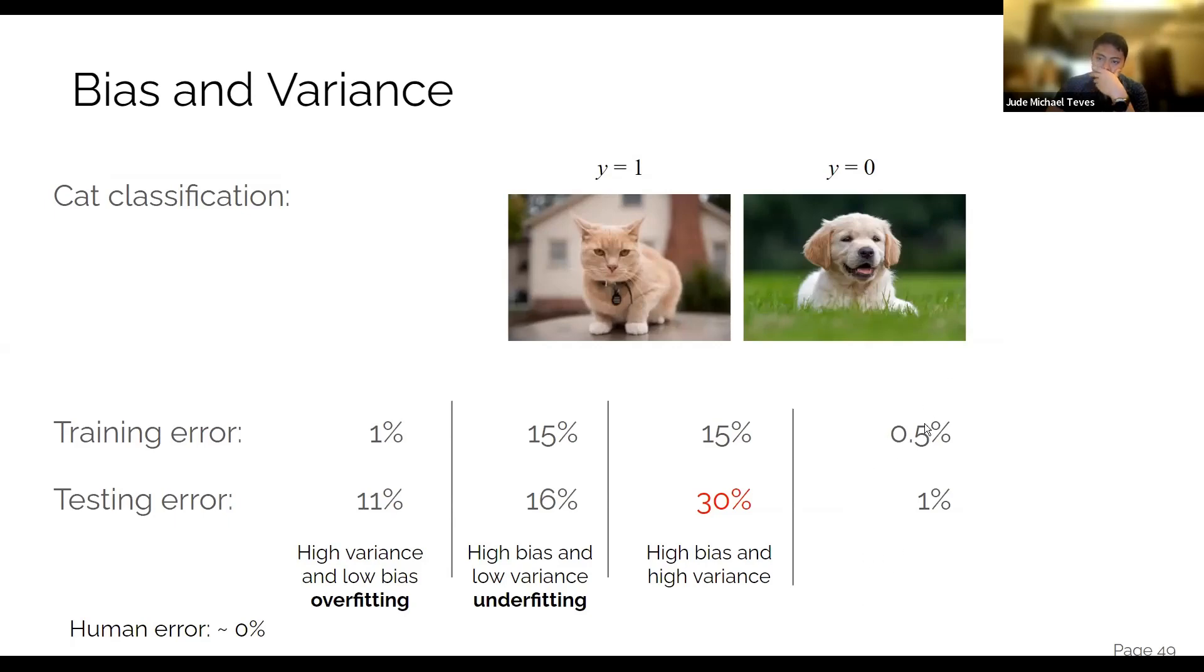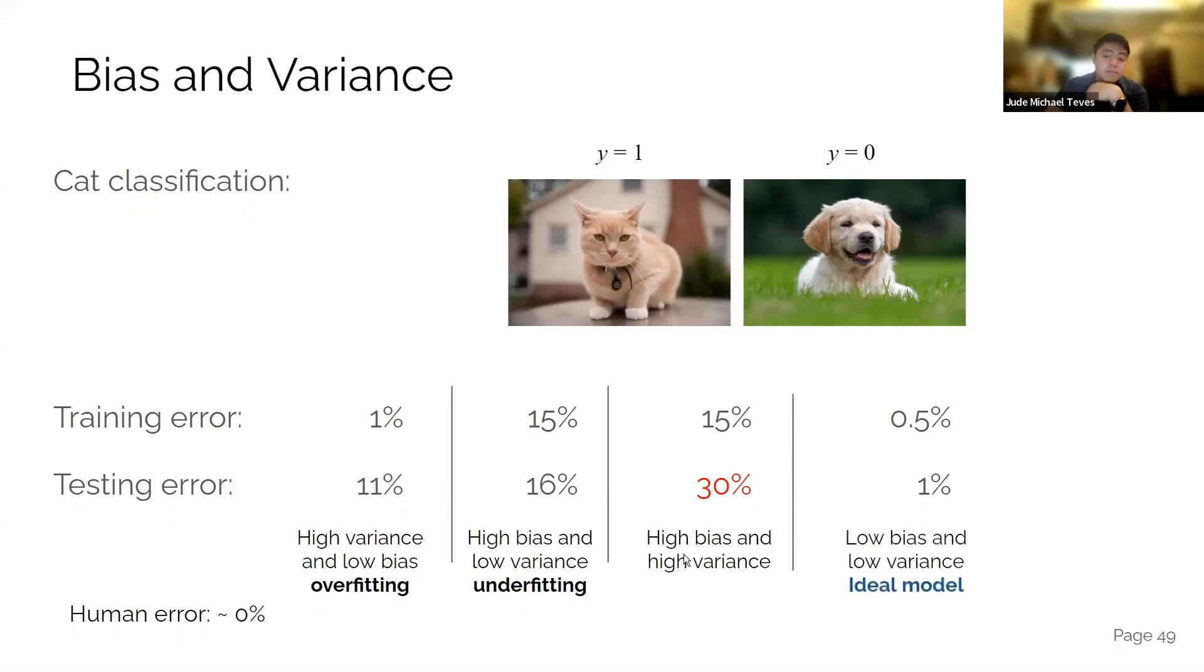How about this one? Low bias, low variance, ideal model. So yeah, that's how you determine if your model is overfitting, underfitting, or it's just okay.